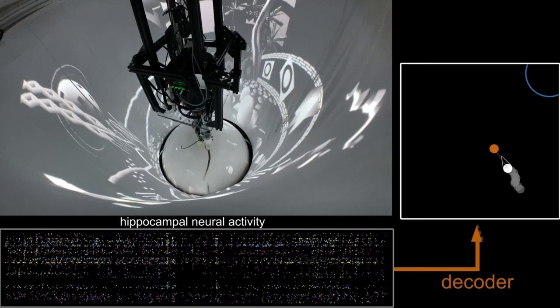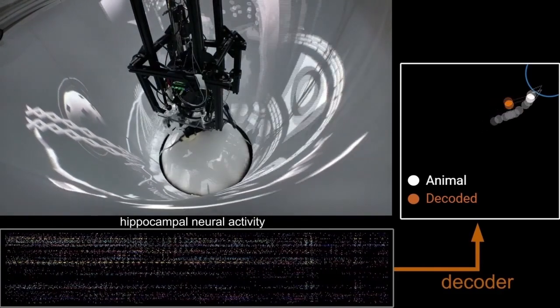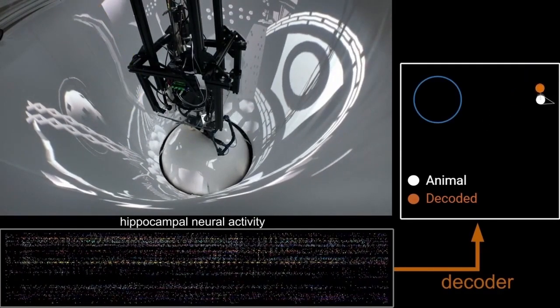Next, we validated the decoder by placing the animal back in the same arena and repeating the task from phase one. Here, we can see the real-time decoded location during the experiment.